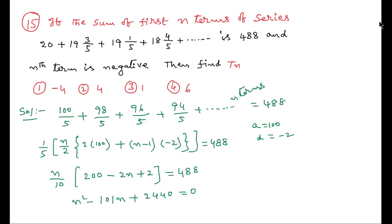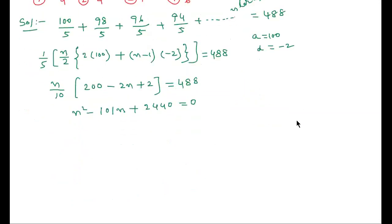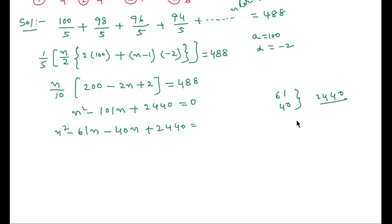Factoring n² − 101n + 2440 = 0: splitting the middle term as −61n − 40n gives (n − 40)(n − 61) = 0, so n = 40 or n = 61.